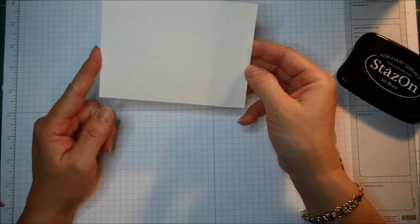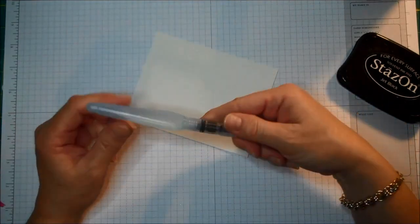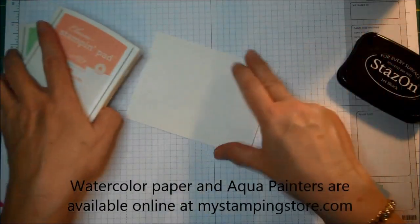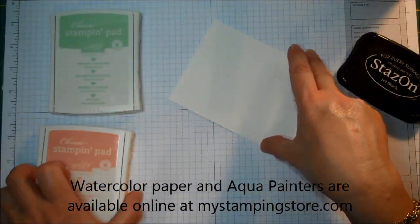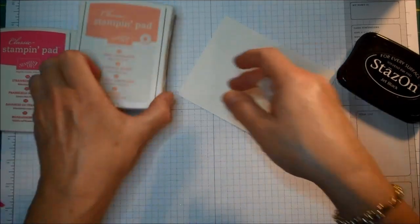I'm using watercolor paper. I've cut this at 4 by 5 and a quarter. I'm going to use my Aqua Pen, and I've selected three colors from this year's InColors: Pistachio Pudding, Strawberry Slush, and Crisp Cantaloupe.